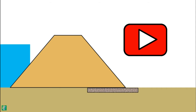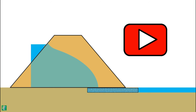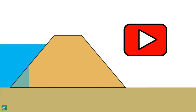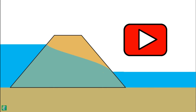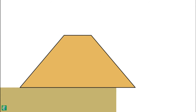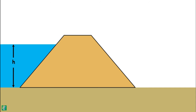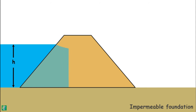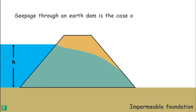In the previous video, we determined the quantity of seepage through the body of an earth dam with a horizontal filter at its downstream. Here in this video, we will discuss the shape of the phreatic line in an earth dam where no filter is provided and seepage water exits on the downstream face of the dam. This earth dam retains water up to height h. We assume the foundation is impermeable and water seeps only through the dam body. Seepage through an earth dam is a case of unconfined flow.